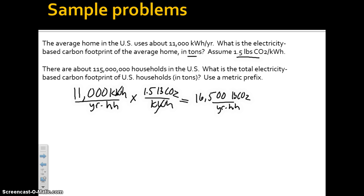Now remember, we're looking for tons. We know that in one ton, there are 2,000 pounds. So that's going to give us 8.25. This is tons of CO2 per household per year. So that is our answer. In this case, it's so small that we do not have to worry about a metric prefix. Now let's look at the second one here.